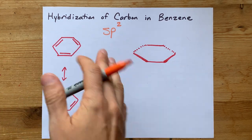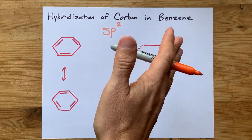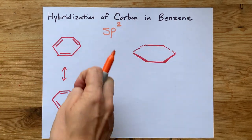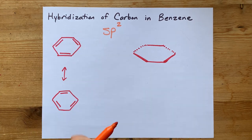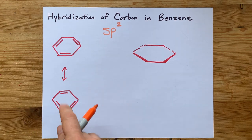What's the hybridization of carbon in benzene? The answer is sp2. I'm going to explain it to you two ways.